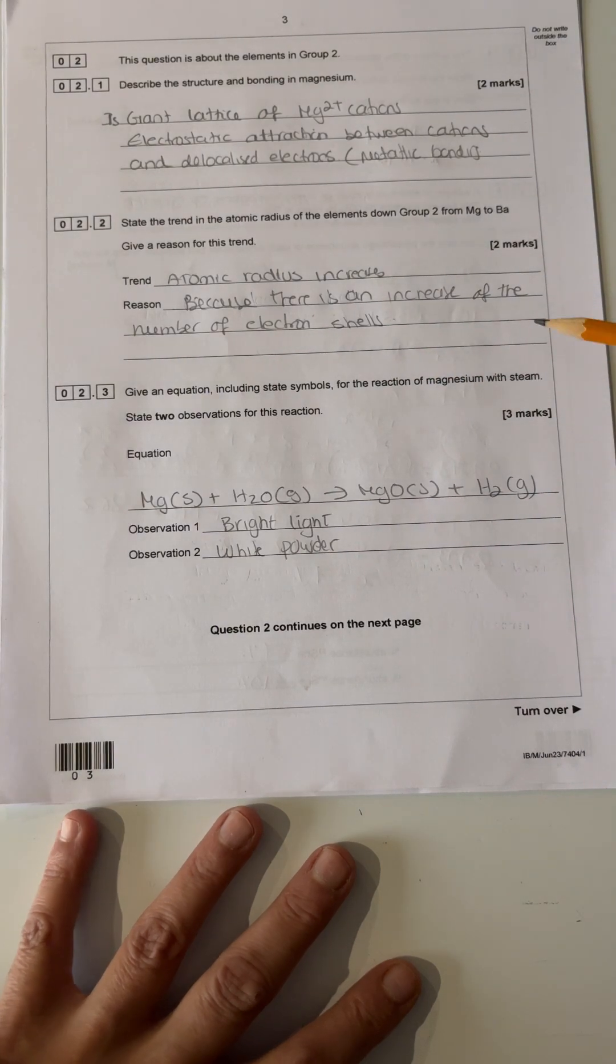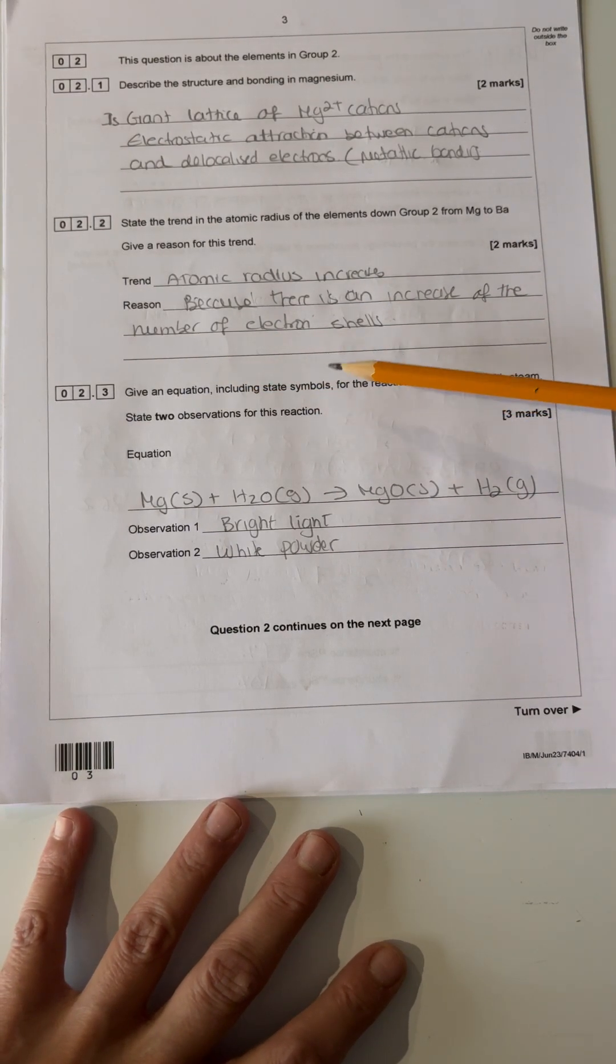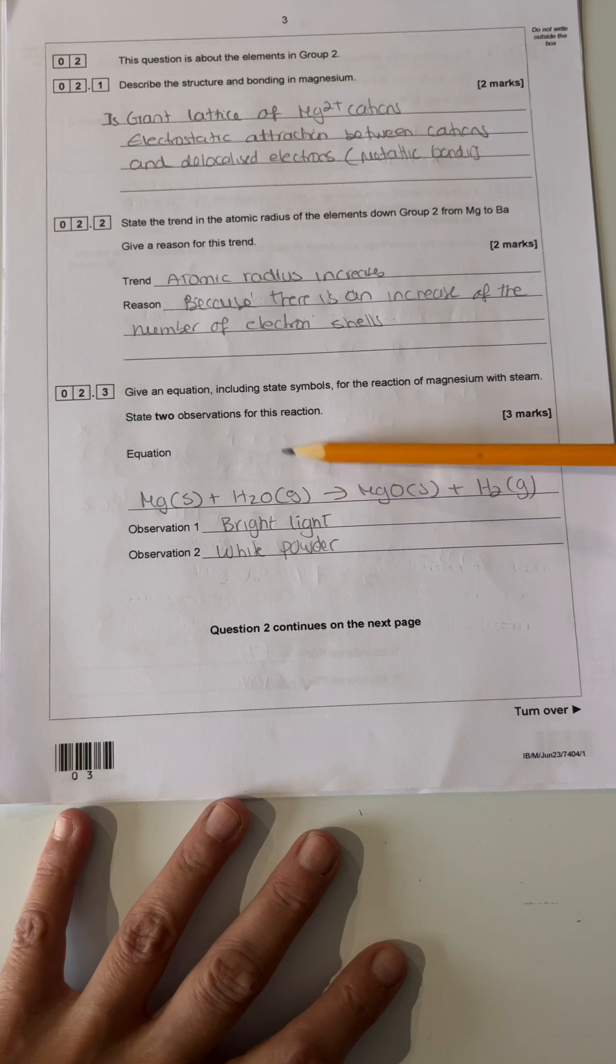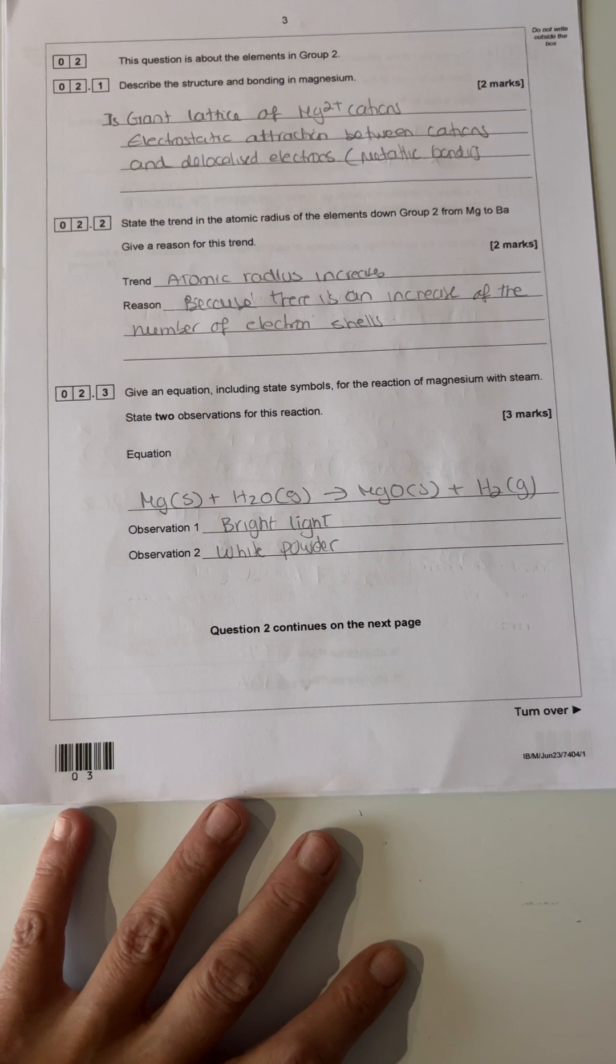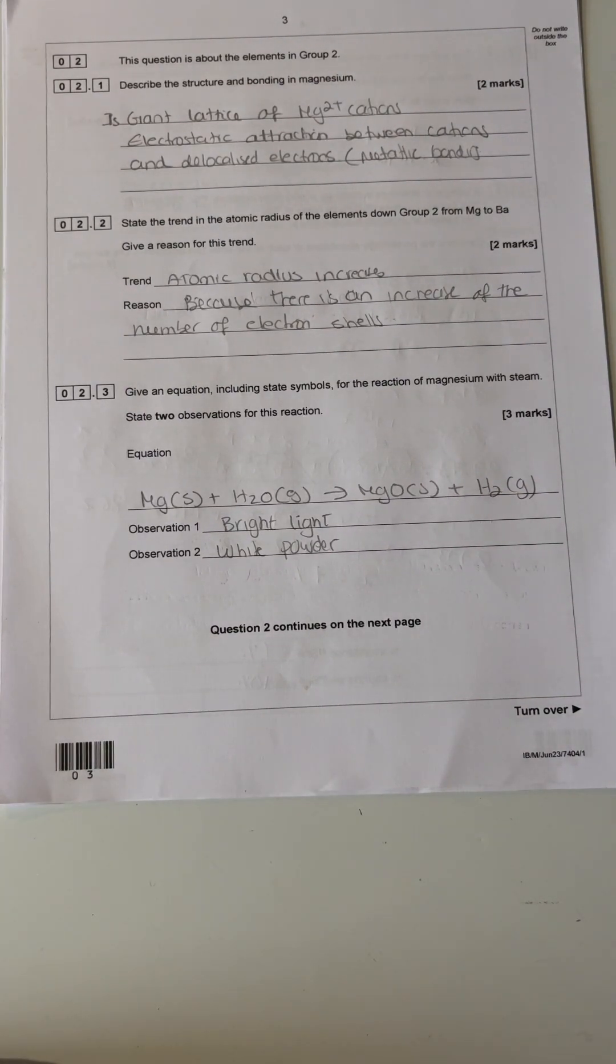Give the equation with state symbols for the reaction of magnesium with steam. State two observations for this reaction. Magnesium reacts with steam, which is in gaseous form, forms magnesium oxide solid plus H2 gas. For observations, you see a bright light and a white powder. You can also say bubbles.